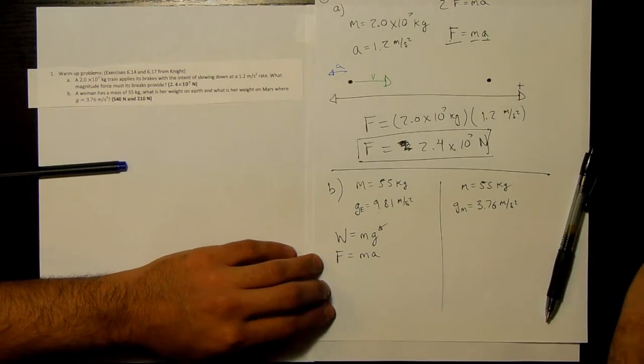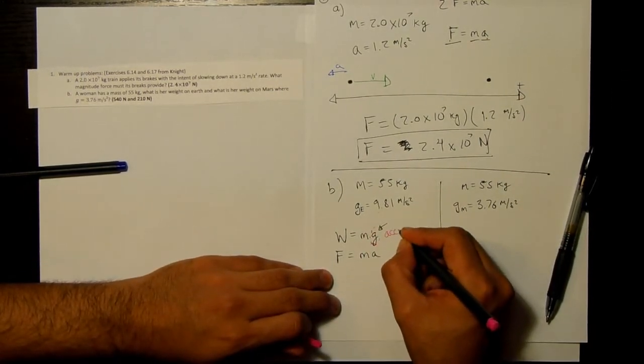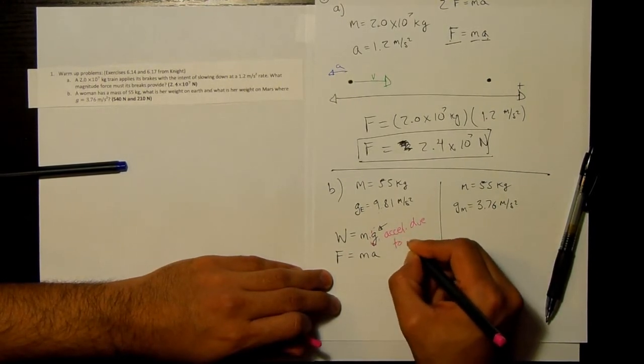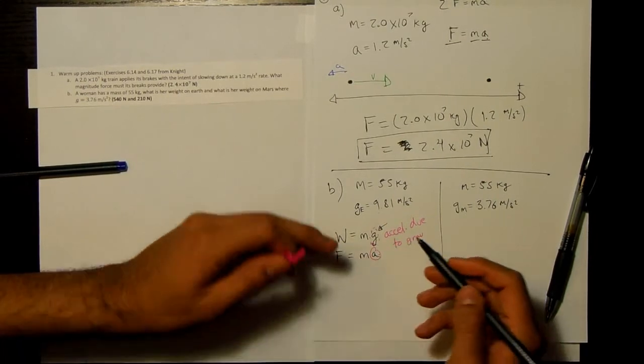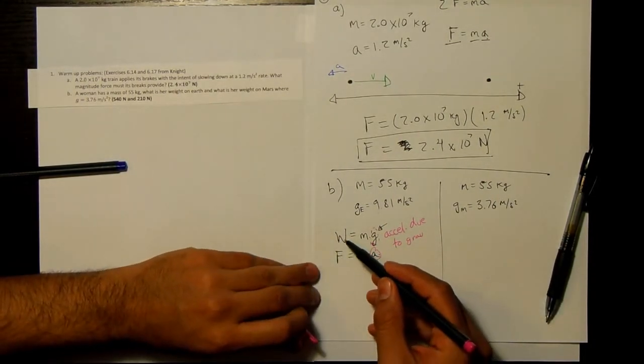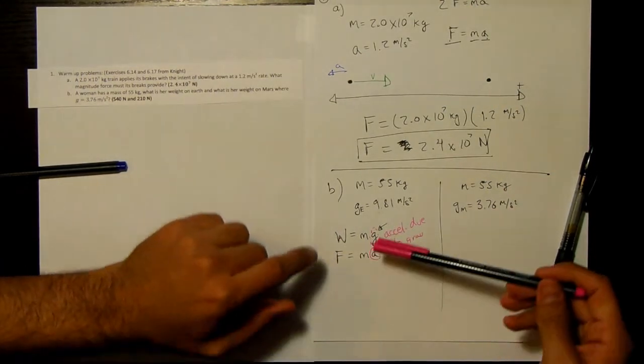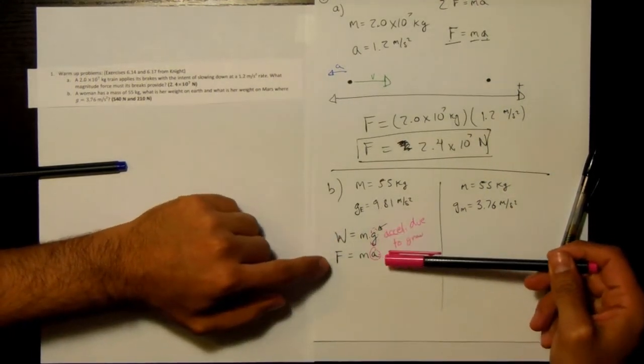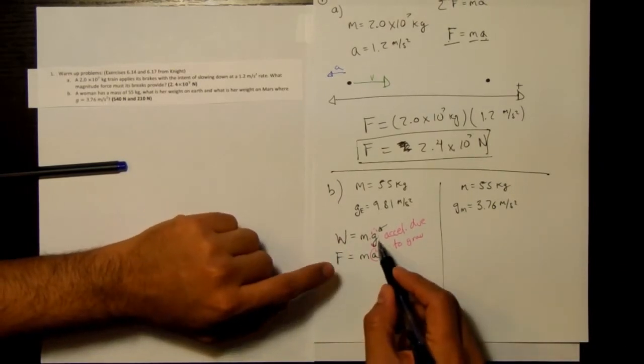There's a reason why we call this the acceleration due to gravity. Because it's the special acceleration that happens when you're talking about the weight force, which is the force due to gravity.